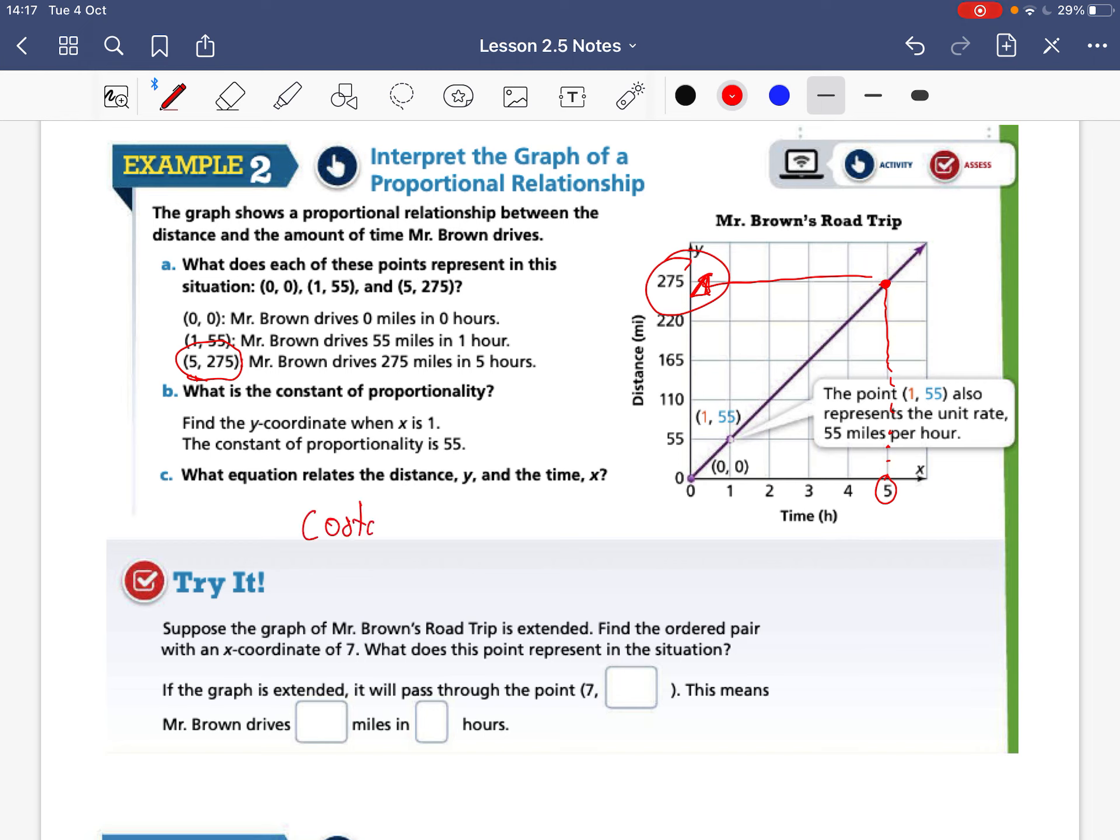What is the constant of proportionality? So that's asking us constant of proportionality, that's our k value. So in this case it is just find the y coordinate when x is one. So when x is one what is y? It's 55 so k is equal to 55 or it's 55 over one which is just 55. What equation relates the distance y and the time x? So our equation is y equals kx. k is 55 so y equals 55x, that is our equation.